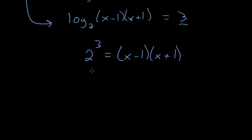And 2 to the third power is just 8, so we have 8 is equal to these binomials multiplied. So here we can use the FOIL, and the first ones, x times x, is just x squared.